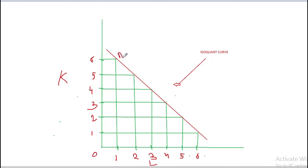Now we have different points on this line: a, b, c, d, e, f. These different points are using different combinations of labor and capital.